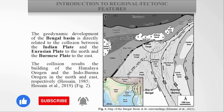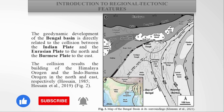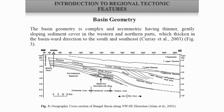The basin was built with Himalayan origin sediments to the north and Indo-Burman ranges to the east, and it shows complex and asymmetrical basin geometry. As seen in the cross-section of the Bengal Basin in figure three, the sediment cover is thinner and gently sloping to the northwestern side, and becomes thicker to the south and southeastern basin-ward direction.